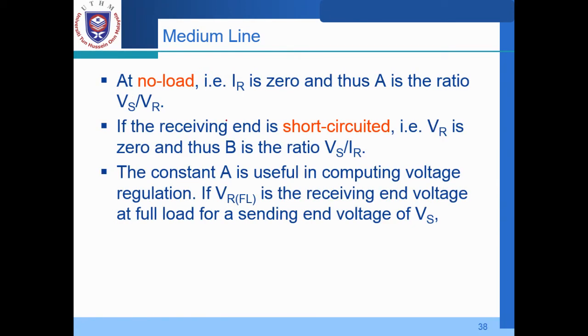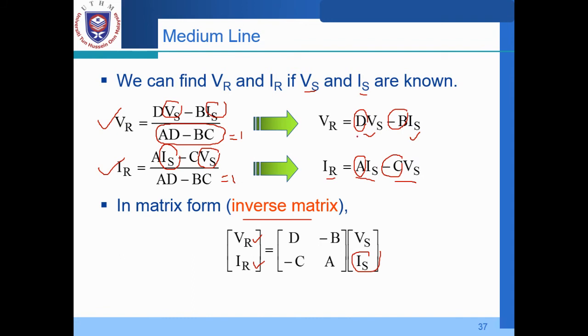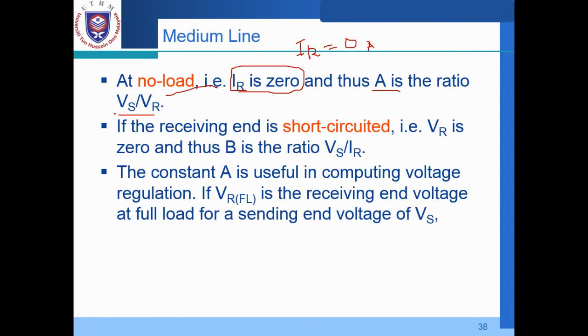Then what happened during the no-load operation? So if the system is run at no-load, so IR is 0. Yes, this is the condition under no-load operation where we have IR equal to 0 ampere. So that A is the ratio between VS and VR. So we can see from, where is it? This one. So whenever the value of IR is 0, rearrange. So we can see that A is actually the ratio between VS over VR.